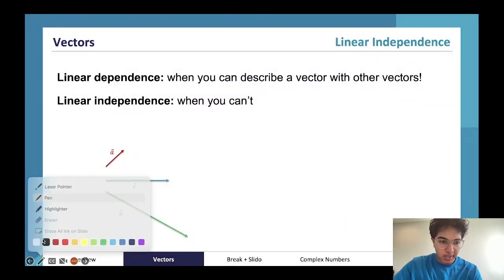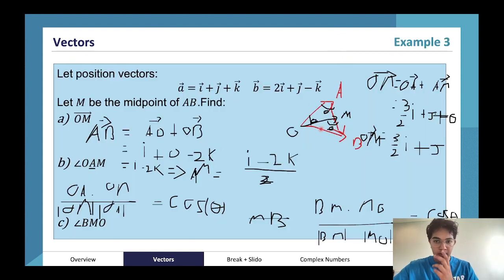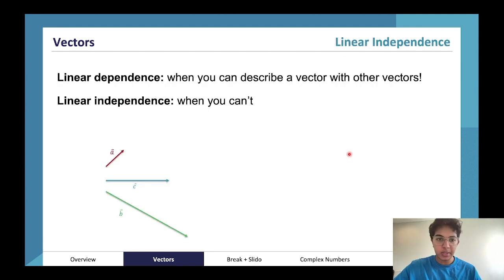Okay, so hopefully that made sense. Feel free to ask questions if it doesn't. Alright, linear dependence refers to when we can describe one vector with a set of other vectors.